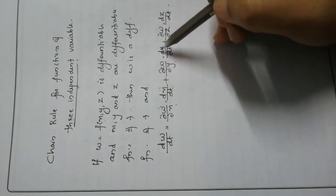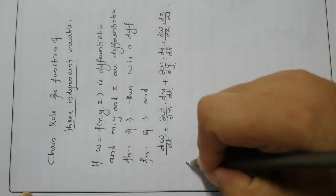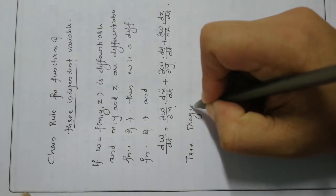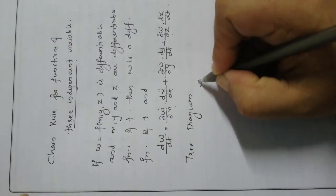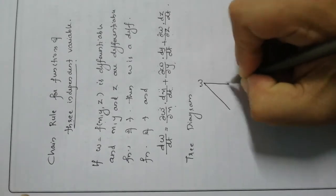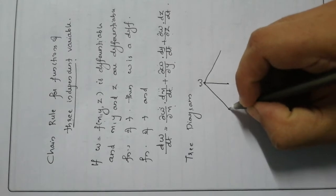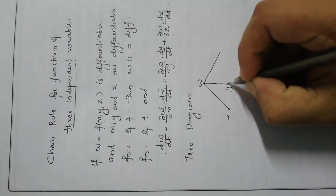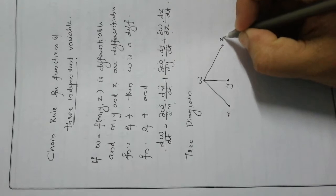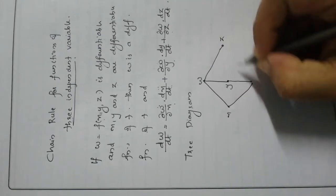Therefore we have dx/dt, dy/dt, dz/dt. This corresponds to the tree diagram. We consider the function w, where w is a function of x, y, and z, and x, y, z are functions of t.